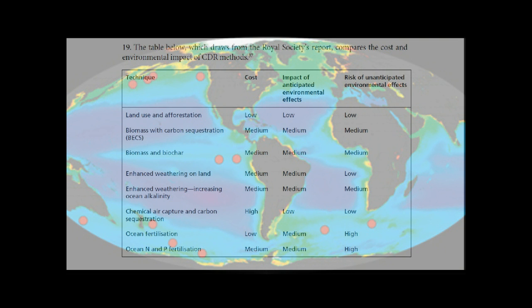Ocean nitrogen and phosphate fertilization: costs are medium, impacts are medium, and risks are high. That's not good.